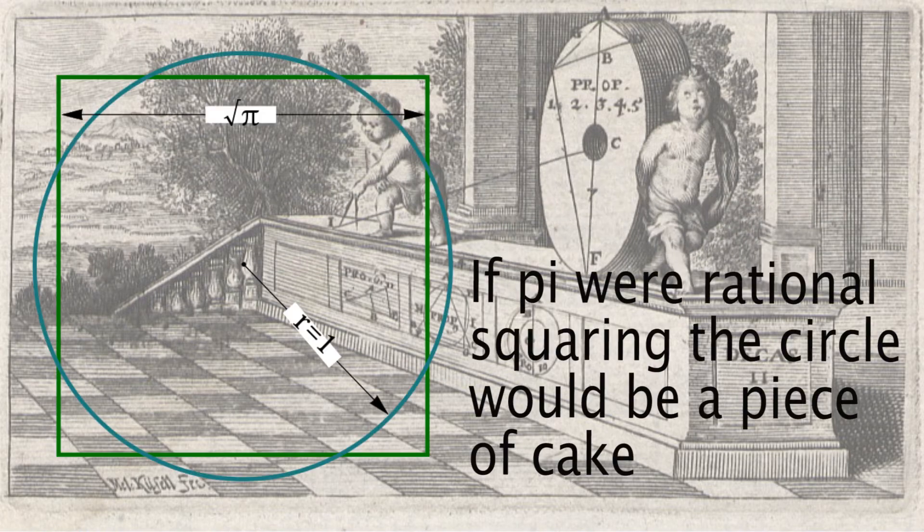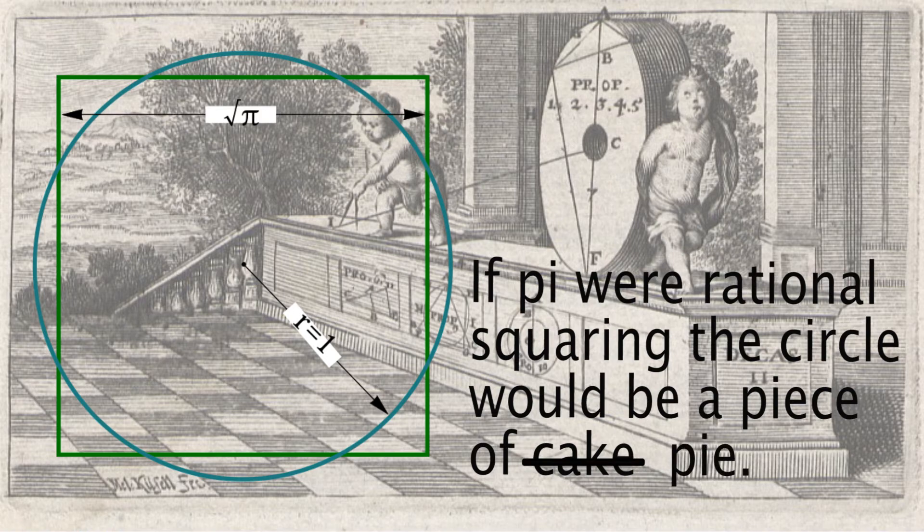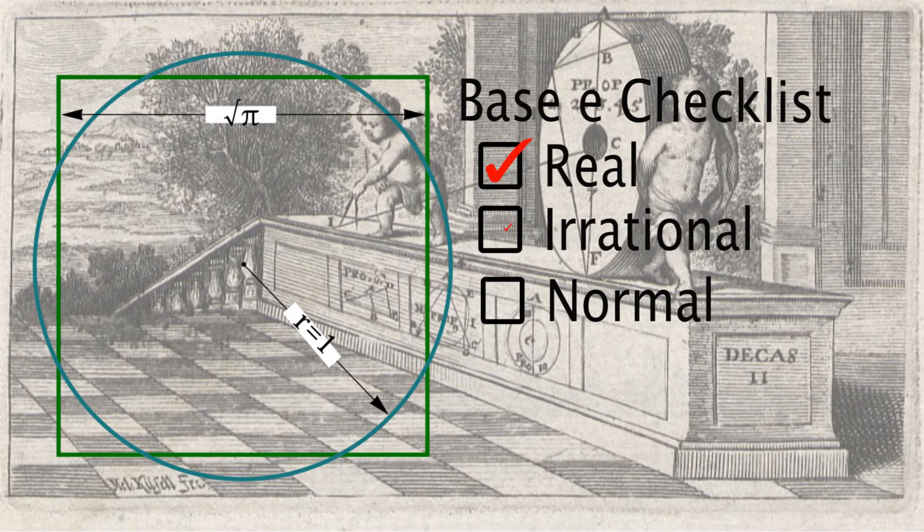However, an irrational number cannot contain a string of infinite zeros. For similar reasons, Pi cannot contain any infinite repetitive string and by extension itself. But this does not rule out other irrational numbers like E.